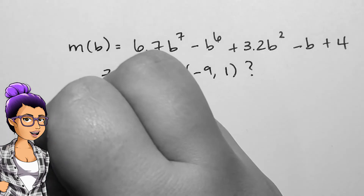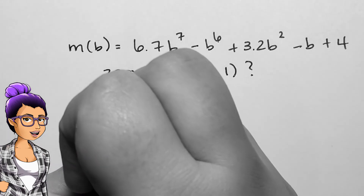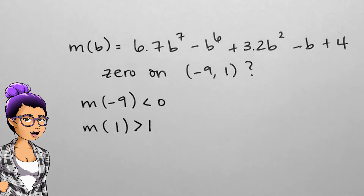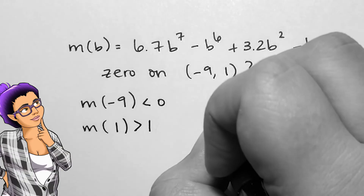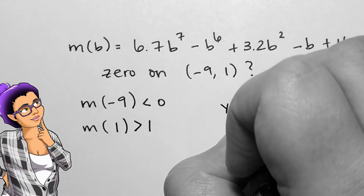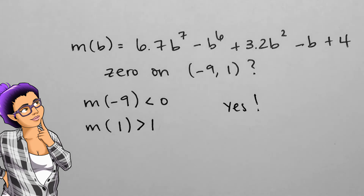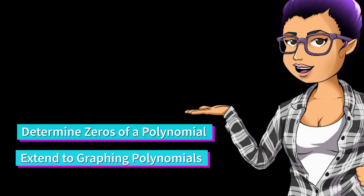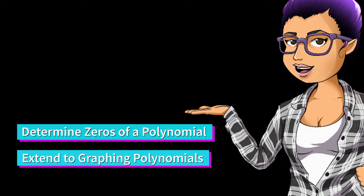Since they are on opposite sides of the x-axis, there must be a zero between them, so my answer is yes, there is a zero in the interval. If they had not been on opposite sides, my answer would have to be 'I don't know,' since I wouldn't be able to tell from the theorem alone. You are now able to use the Intermediate Value Theorem to determine if an interval has a zero in it, and you can use this theorem to assist you in sketching an estimated graph of a polynomial.